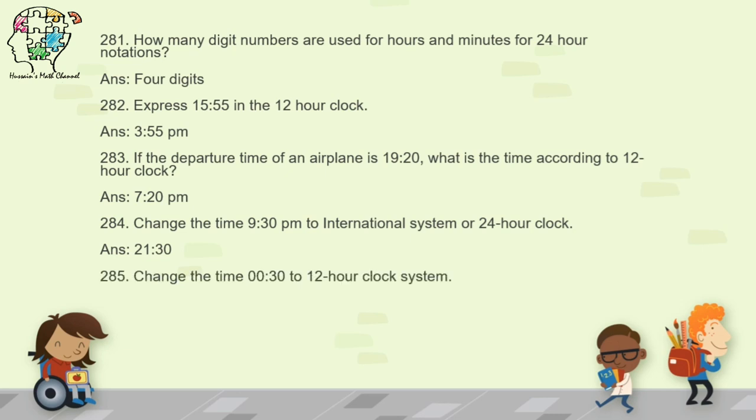Question 285: change 0:30 in 24-hour clock to 12-hour clock. Since there is no AM or PM, it is a 24-hour clock time. At nighttime, 0:30 means midnight past 30 minutes, so the answer is 12:30 AM.